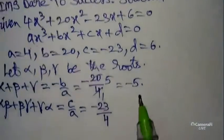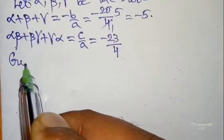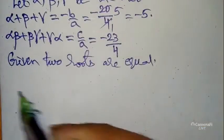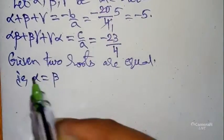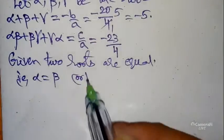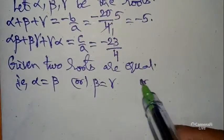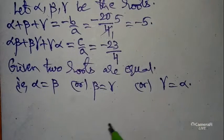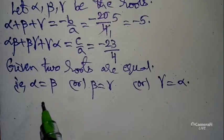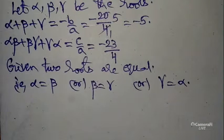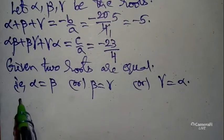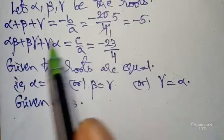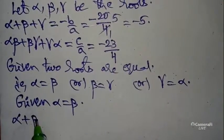Two roots are equal. We can take alpha = beta, or beta = gamma, or gamma = alpha — as you wish, take any one condition, but not both. My suggestion: first is best. So let alpha = beta. We substitute this condition into the equations.